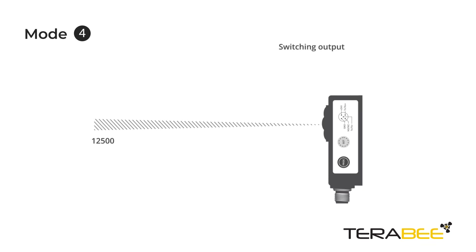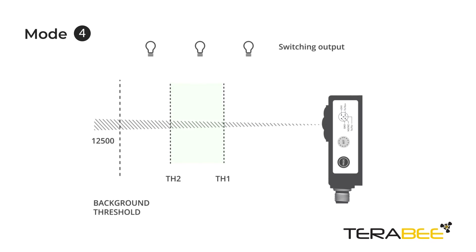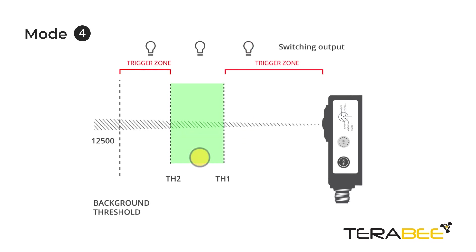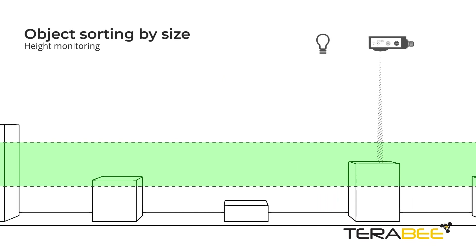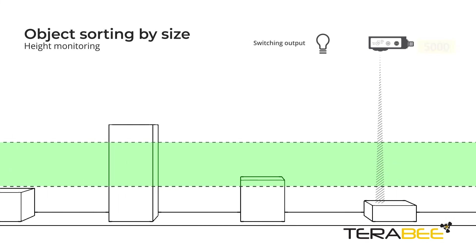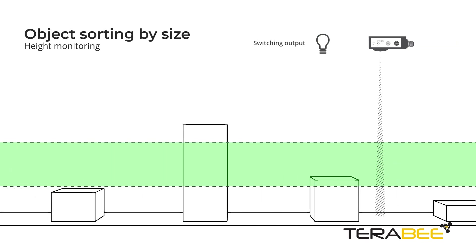In mode 4, a background threshold alongside the switching window are taught in. The sensor changes its status as soon as an object has left the selected threshold area. This mode is used for monitoring object height or sorting items by size.